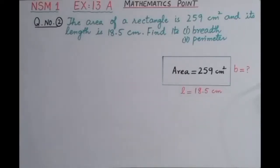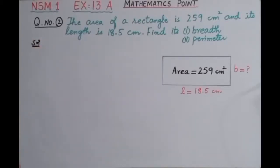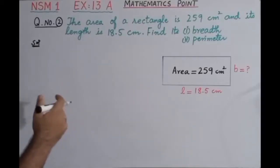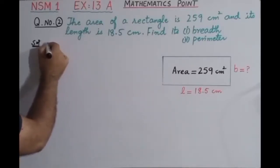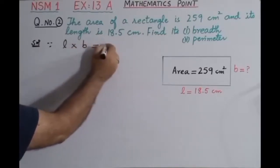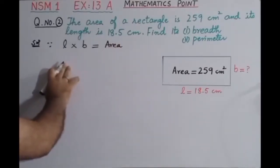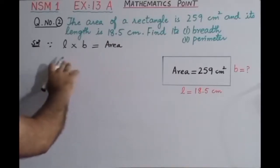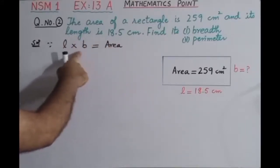Now we are going to solve this question. First of all we write down the formula. As you know, the formula to find the area of a rectangle is length multiplied by breadth. So we write: length multiplied by breadth is equal to area of rectangle. Normally we write area is equal to length into breadth, but here we write area on the right-hand side and the product of length and breadth on the left-hand side.